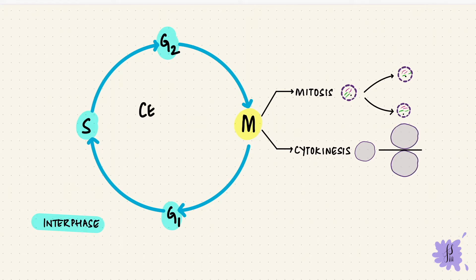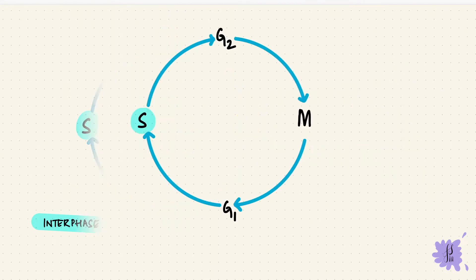Now before we look at mitosis we're going to look at the interphase part of the cell cycle. S is the synthetic phase, M is the mitotic phase. The G1 and G2 phases are gap phases in between. The G1 phase is before the synthetic phase. The G2 phase is before the mitotic phase.